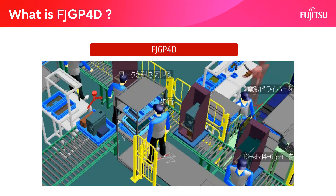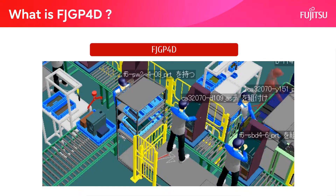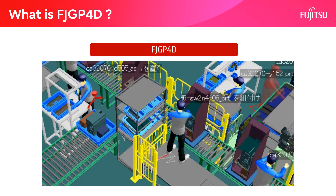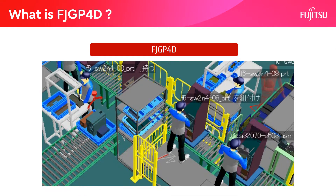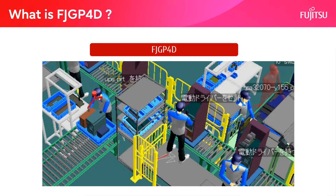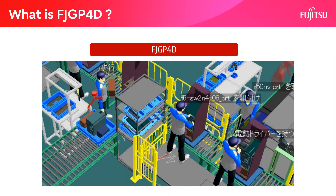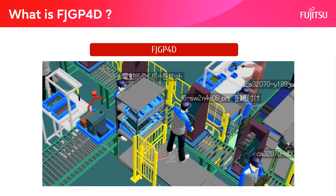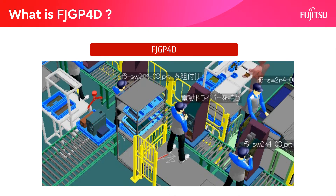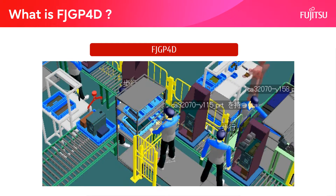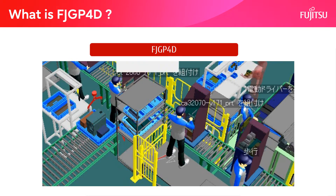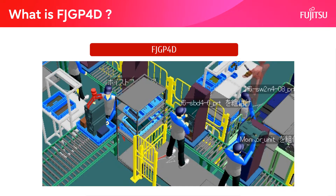Take a look at the FJGP4D simulation. Multiple products are flowing on the conveyor at the same time, and multiple workers are operating. It can be played back according to the operation time designed by FJGP4D, or it can be played back at a higher speed.